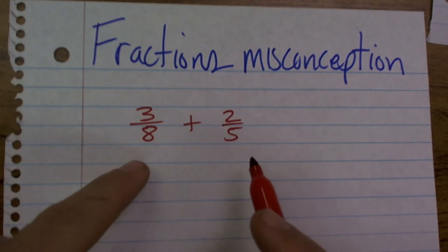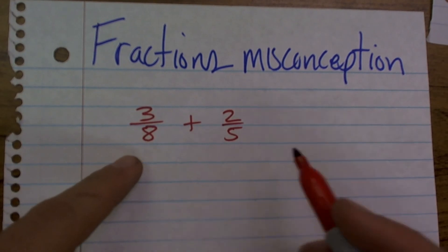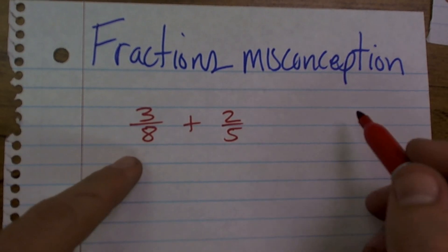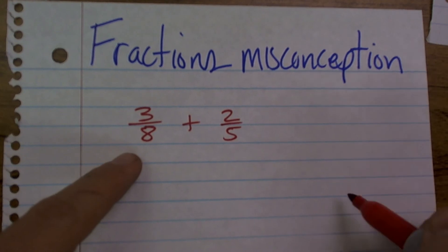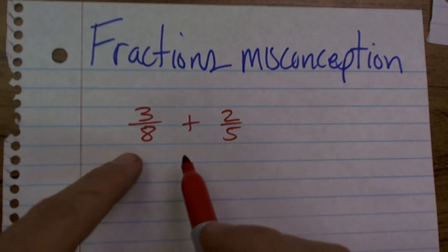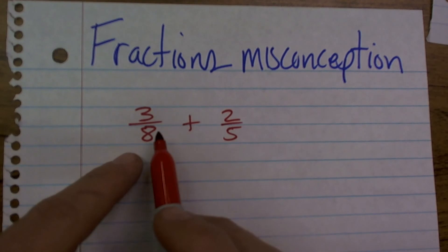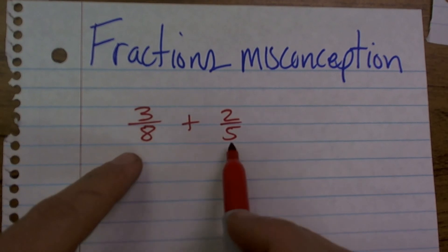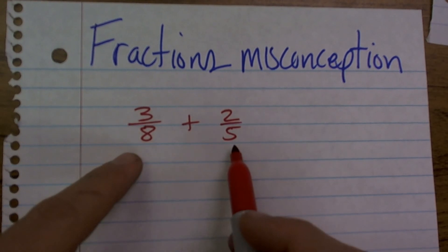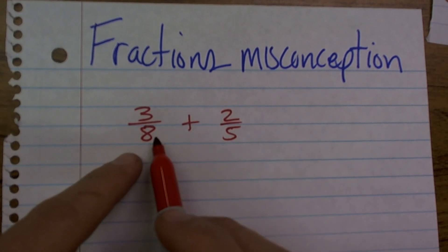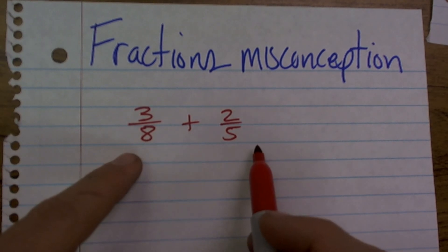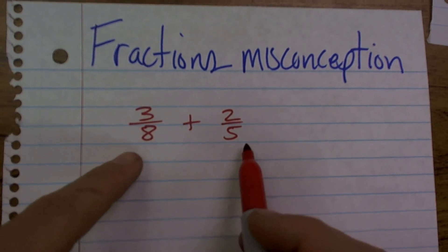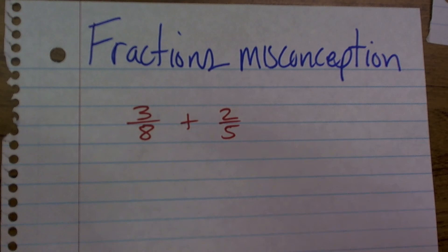So if I look at 8 and 5 and list the common multiples, I could list all the multiples, but what I notice from my multiplication tables is that 8 and 5 share the same multiple of 40 — meaning 8 goes into 40 and 5 goes into 40. And that's also going to be the lowest common multiple, which you always want to find.